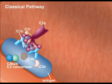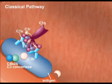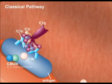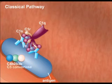C3B becomes bound to the cell surface, whereas C3A is released. C3B then adsorbs to C4B2B to form C4B2B3B. This structure is called C5-convertase.